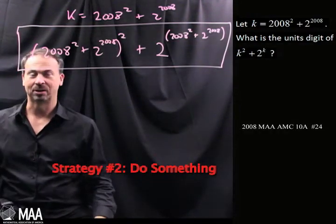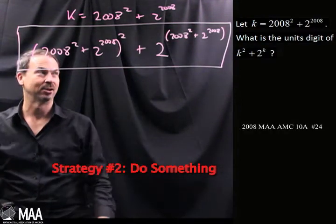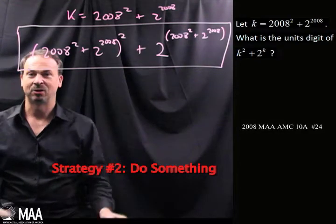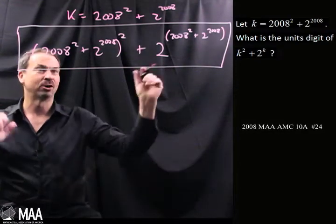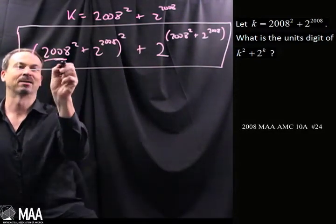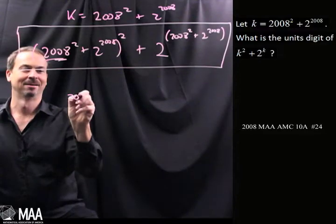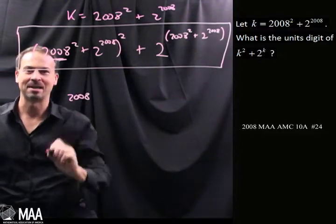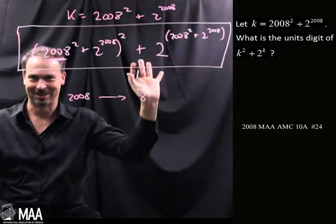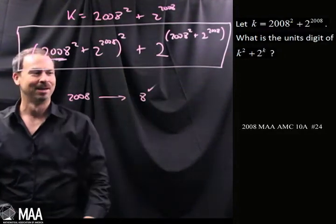We want the units digit — we want the last digit. Can I at least work out the last digit of something in this expression? I'll choose something easy, like 2008. Do I know the last digit of 2008? You bet. It's an 8.